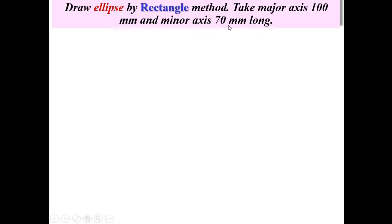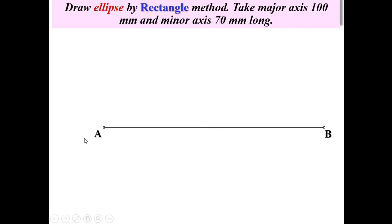Take the major axis as 100 mm and the minor axis as 70 mm long. Initially, the major axis is equal to 100 mm. Draw AB as a horizontal line of 100 mm length — this is called the major axis.